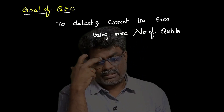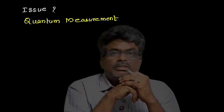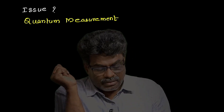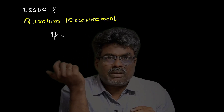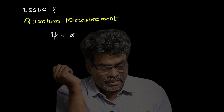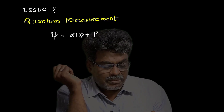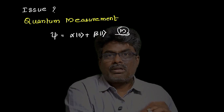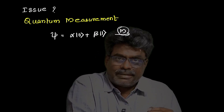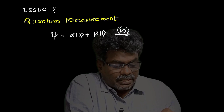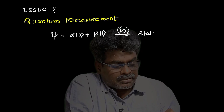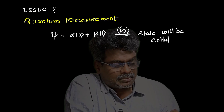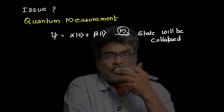There is a small issue: quantum measurement. For example, a qubit is always in a superposition state, that is α|0⟩ + β|1⟩. Whenever you make a measurement on this, the quantum state will be disturbed, destroyed, or collapsed — the superposition state is lost.